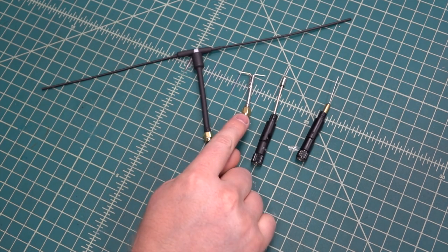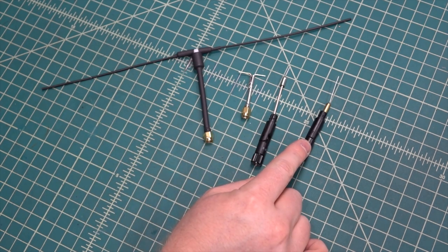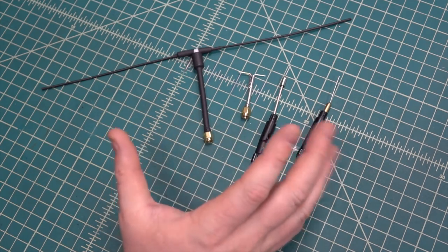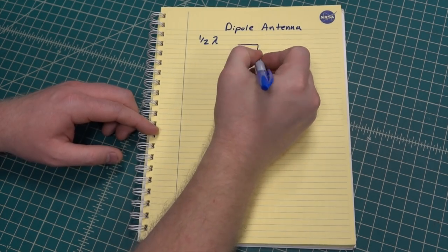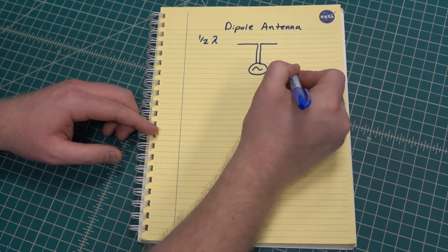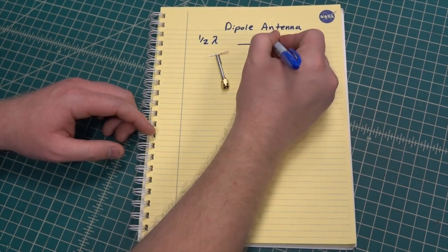So what you notice is that as the frequency gets lower the antennas get bigger. The most common dipole antennas you see are about half wavelength long consisting of two quarter wavelength sections configured like this.